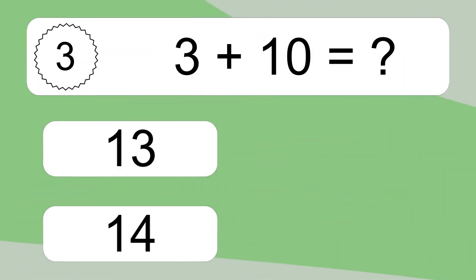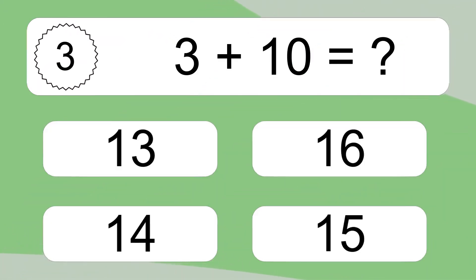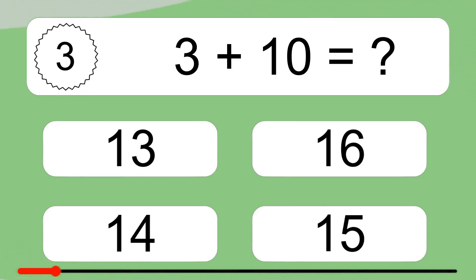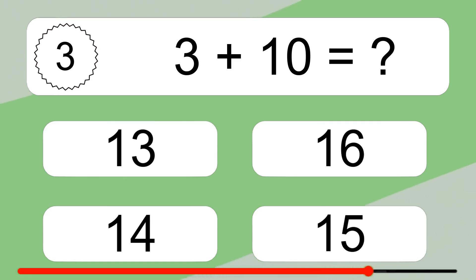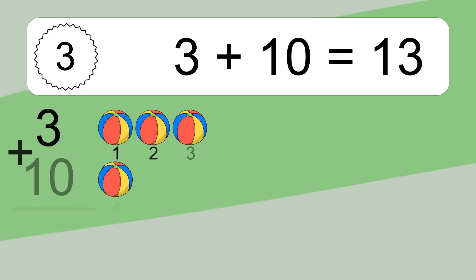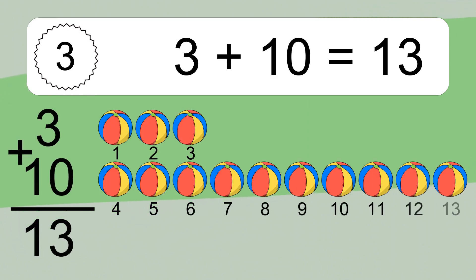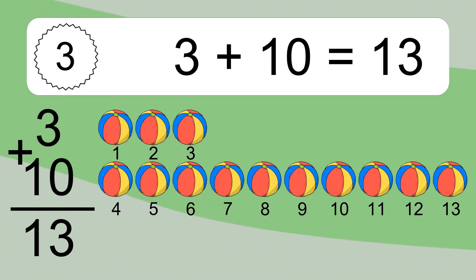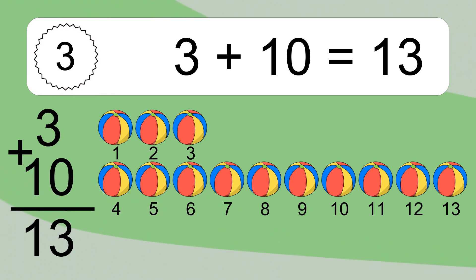3 plus 10 equals what? 3 plus 10 equals 13. Let's count it. 1, 2, 3, 4, 5, 6, 7, 8, 9, 10, 11, 12, 13.